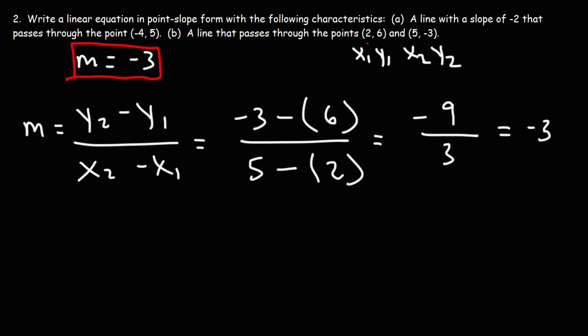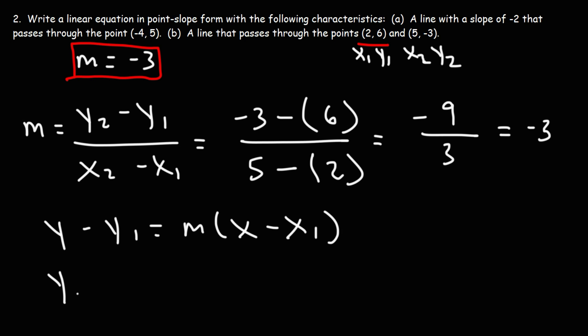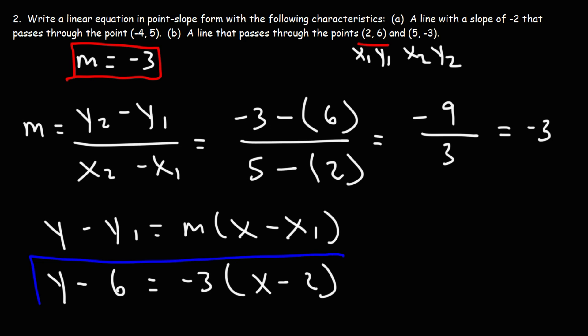I'm going to use the point (2, 6) as the x1, y1 point. Now we have everything we need to write the linear equation in point-slope form. We replace y1 with 6, m with negative 3, and x1 with 2. This gives us our answer: y minus 6 equals negative 3 times x minus 2. That's how you can write a linear equation in point-slope form if you have a slope and a point, or if you're given two points.